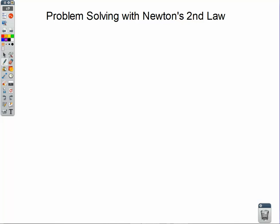First up, Newton's second law: F is equal to MA. Forces are the reasons that things accelerate, and forces are also the reason that things don't accelerate. Most of the time we're not dealing with just one force, so we're really talking about the net force — the sum of all force vectors acting on the object — equal to mass times acceleration. Acceleration is also a vector, which means the direction of the net force is the same as the direction of the acceleration.